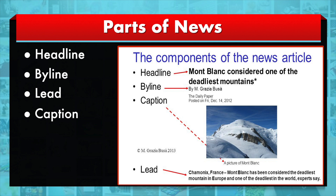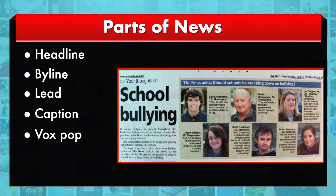The latest addition in journalism is the 'voice of the population,' wherein to make news more authentic, we take the help of local people — where the incident happened, how it happened, what they feel about it, whether they are for it, against it, or neutral, and what the people of that particular locality want to say. These are the different parts of news.